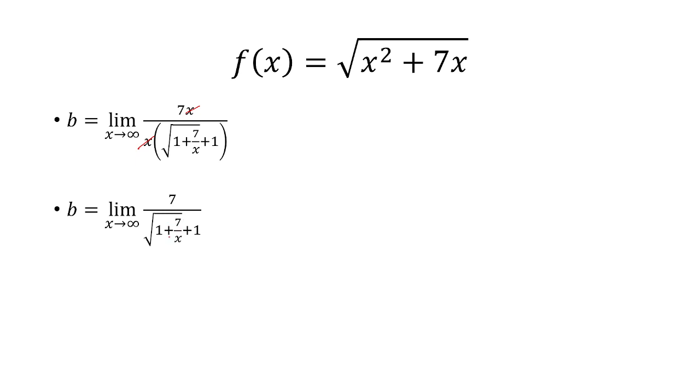As x approaches infinity, this goes to 0. So, I have 7 over the square root of 1 plus 1, which is just 7 halves. So, b is 7 halves, a is 1. That is our final answer.